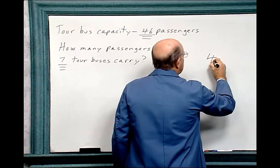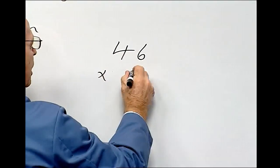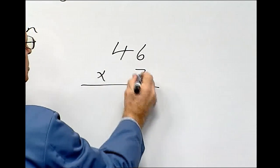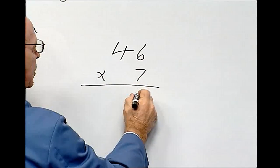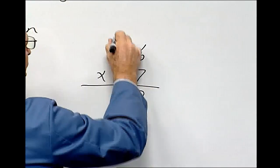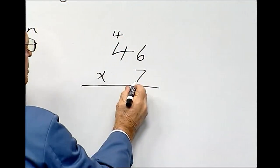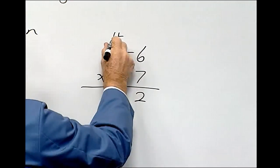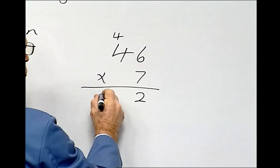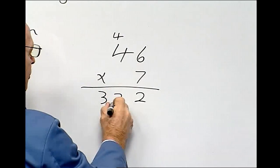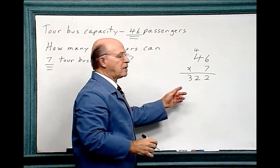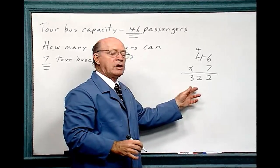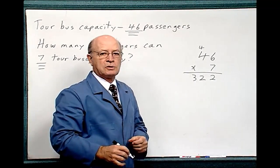So 46 times 7. 7 times 6 is 42, so we put the 2 here and carry the 4. 7 times 4 is 28, plus 4 is 32. So the seven tour buses can carry 322 passengers.